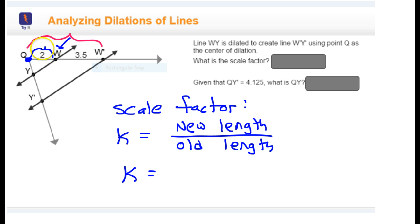So, the original distance is 2, as you can see right here. But the new distance is not 3.5. It's 2 plus 3.5. The new distance is all the way from Q to W prime. So that is 5.5.